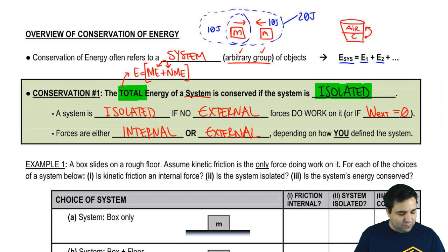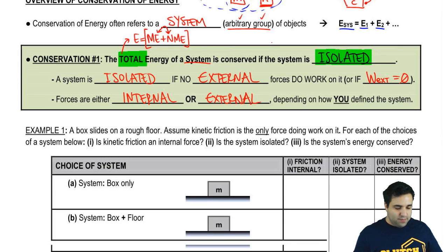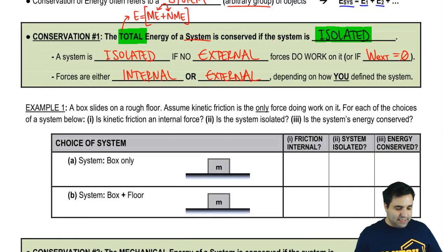For example, if I have the system made up of just this one object here, then this guy, the second block, is considered external to the system. It's not part of the system. The best way to look at forces internal versus external is to do an example.